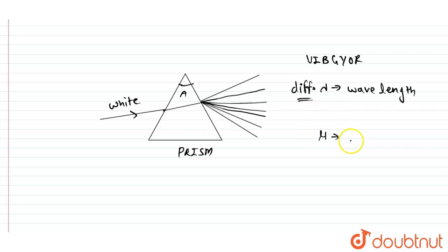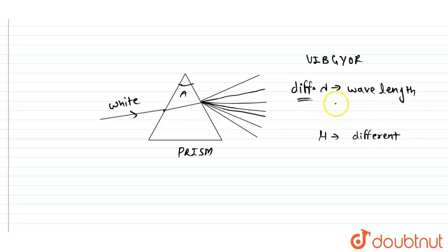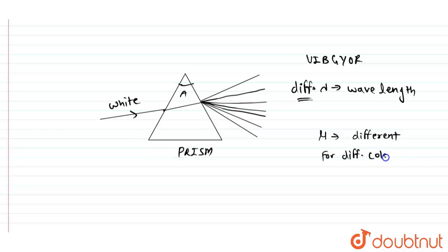Also, due to the difference in mu — mu is the refractive index, which you can write as sine i upon sine r. When the light travels in vacuum and strikes the prism, the medium changes. Mu is different here for the different colors.